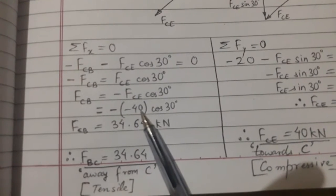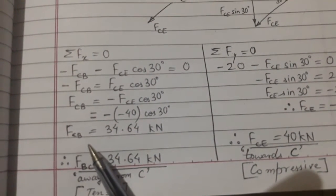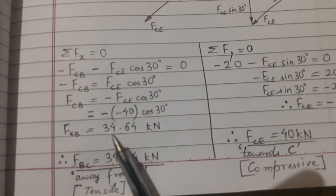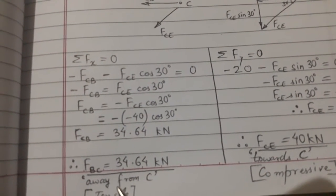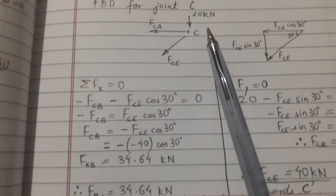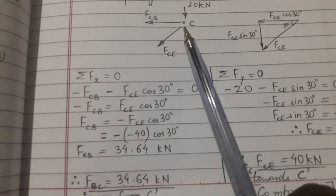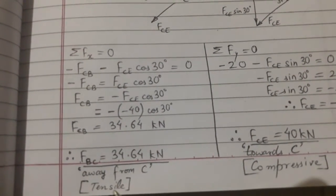The FCE value we put here with the sign which we got, that minus 40. So FCB or FBC we got as 34.64, that is a positive value. That's why it is away from C. Our assumption that FBC is away from point C is correct. That's why this is tensile.